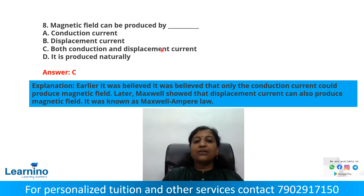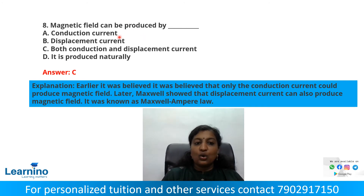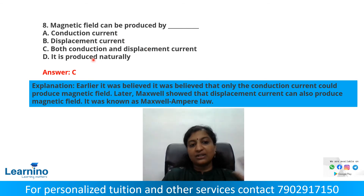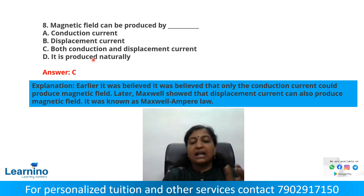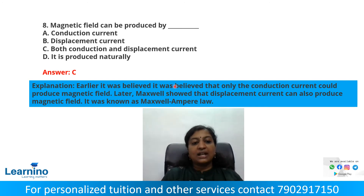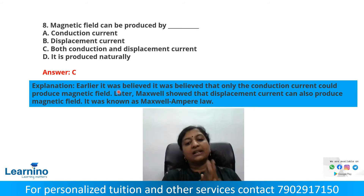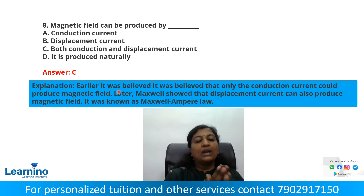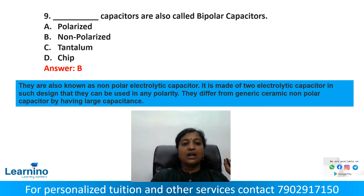Question number 8: A magnetic field can be produced by — options are conduction current, displacement current, or both conduction and displacement current. It was earlier believed that only conduction current could produce a magnetic field, but Maxwell showed that displacement current can also produce a magnetic field. So the correct answer is both conduction and displacement current — that is Maxwell's amended Ampere's law.